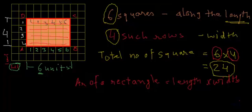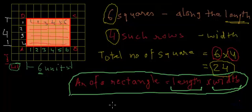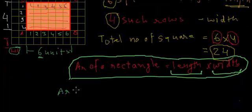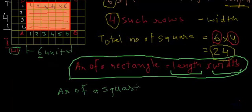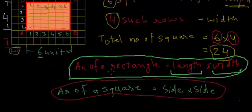This is the derivation of the area of a rectangle. Now, what about a square? A square is a rectangle in which the length and breadth are the same. So the area of a square can easily be derived from this formula. If we call the length 'side', then the width is also 'side', so the area of a square = side × side.